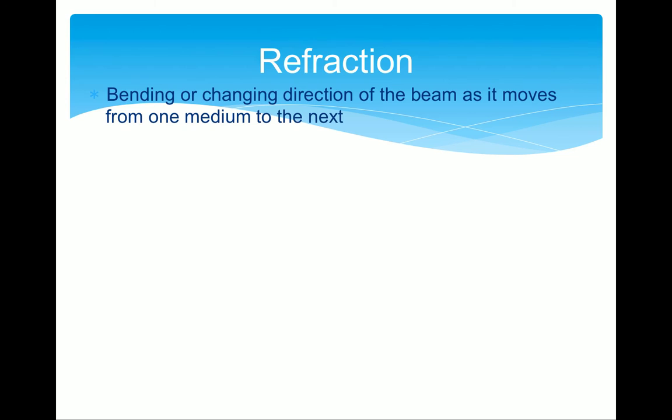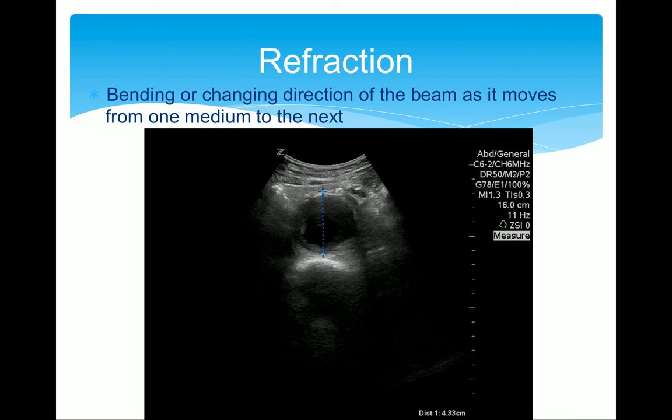There are a couple more artifacts I want to explain to you. To understand refraction, think of what happens when you put a stick in the water of a pond — as it enters the water the stick appears to bend; the light is refracted. Something similar happens with ultrasound waves. This is an image of an abdominal aortic aneurysm. You notice that there are shadows here which we call edge artifact, and this is caused by refraction of the ultrasound wave.